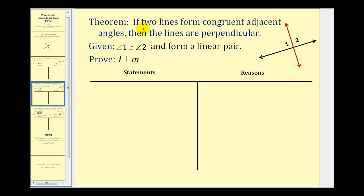Now let's take a look at our theorem and the proof. We want to prove: if two lines form congruent adjacent angles, then the lines are perpendicular. More specifically, if we know that angle one and angle two are congruent and form a linear pair, then line L and line M are perpendicular. Remember, in order to prove that line L and M are perpendicular, we must prove that angle one and angle two are right angles, which follows from them both having a measure of ninety degrees.